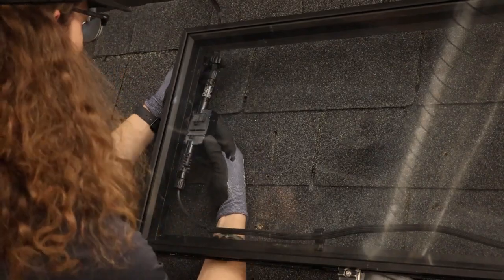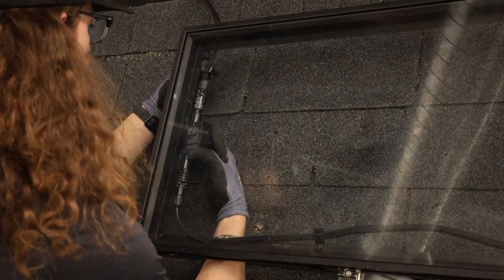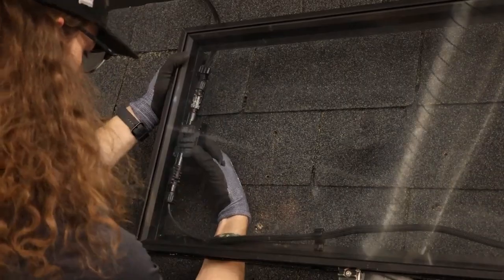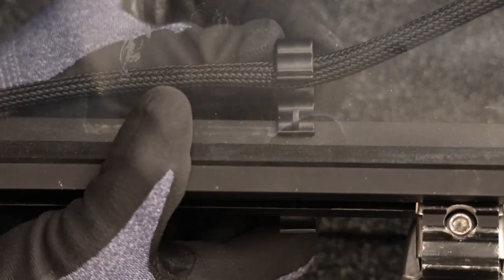After they are connected, MCIs are secured under the array with a wire management clip on each side, keeping it off the roof surface and out of sight.